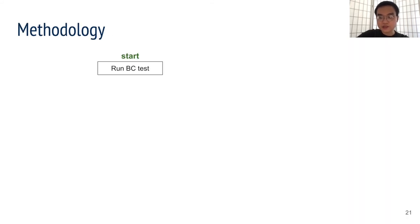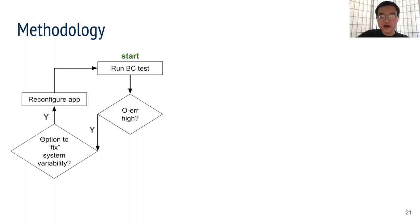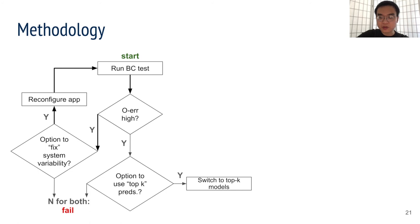So to recap, we start from the best-case setups. We run experiments and see oracle errors are high. So we check whether we can find root causes and modify the system, or we can switch to probabilistic predictions. Then, if the BoM error in the best case is high, and for some reasons tuning machine learning models does not help, we have to give up.